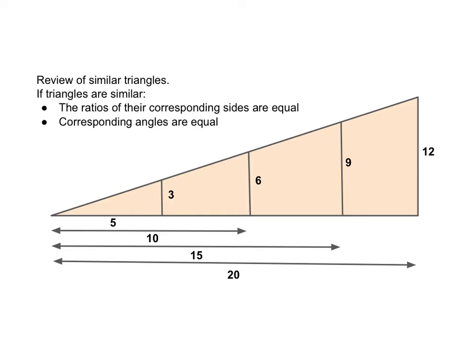If triangles are similar, that means that the ratios of their corresponding sides are equal, and it means that the corresponding angles are equal. So the first thing we're going to do is look at this diagram and see if we can determine if this is made up of similar triangles.